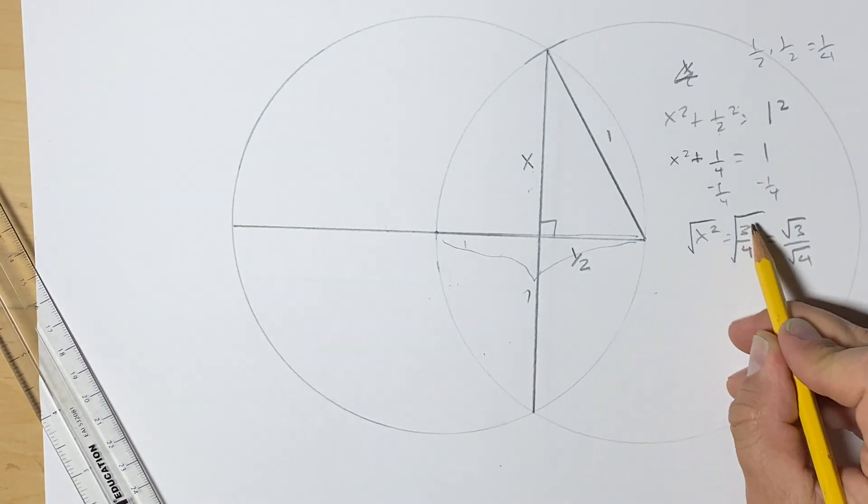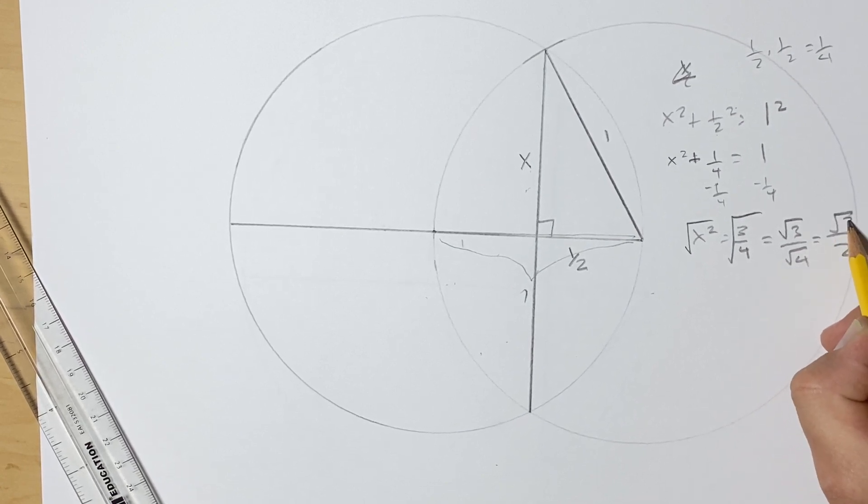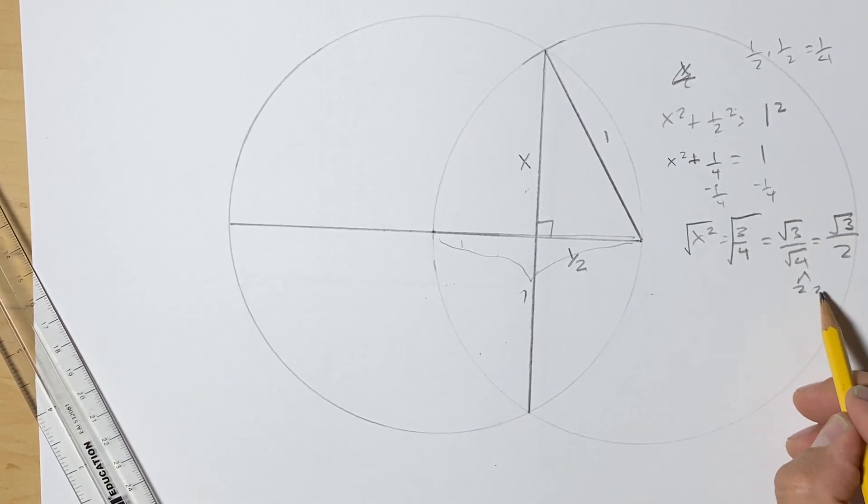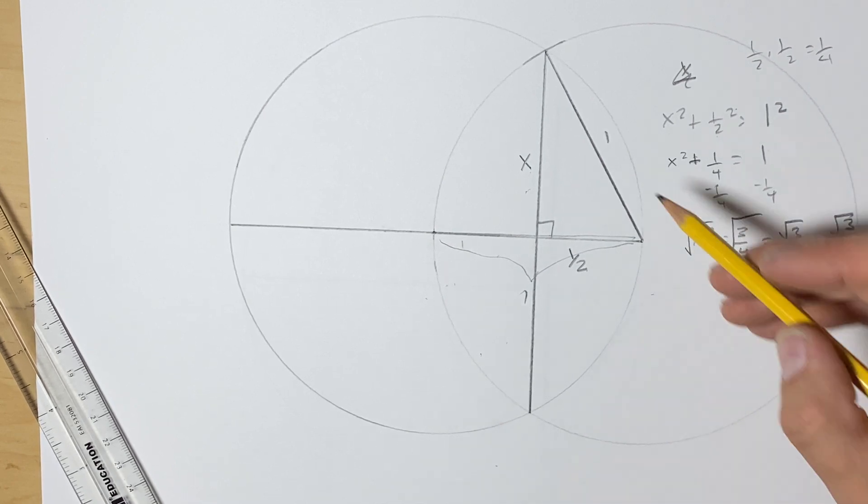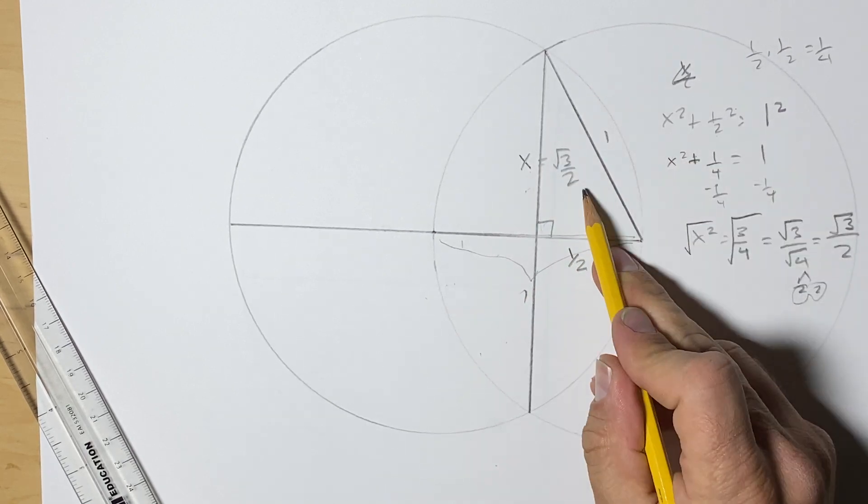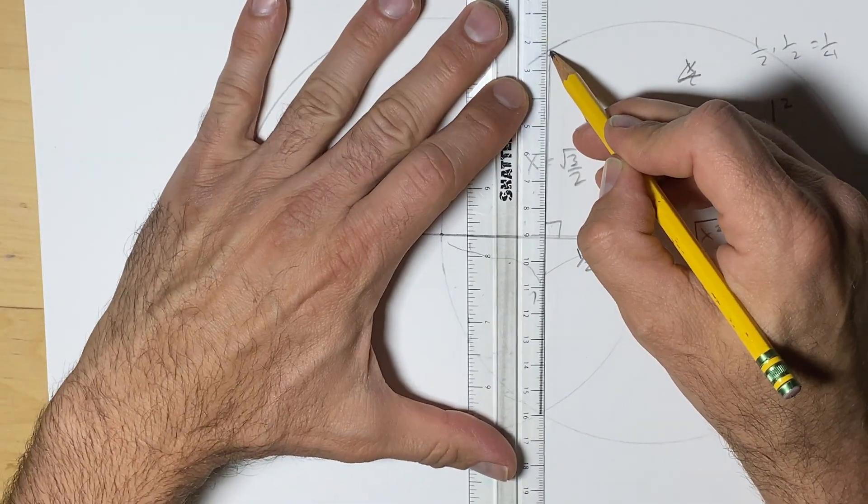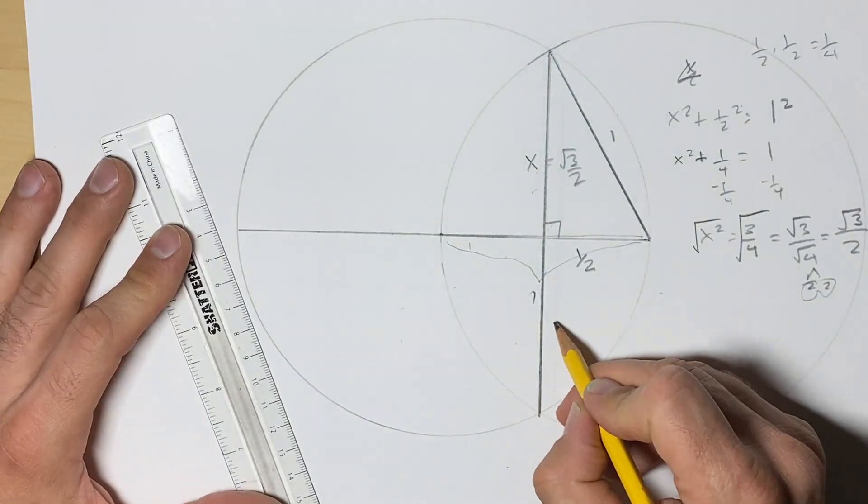I will root both sides and I will get, by our rule, we can separate them: √3 over √4, the same thing. √4 we know is 2 when we take out 2 times 2, we take out a pair, and that's the square root of 4 is 2.